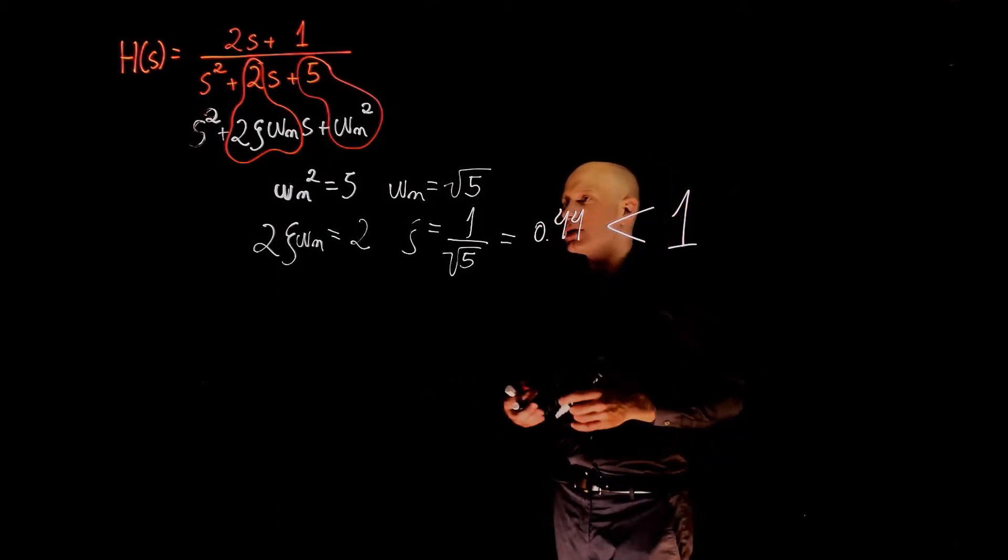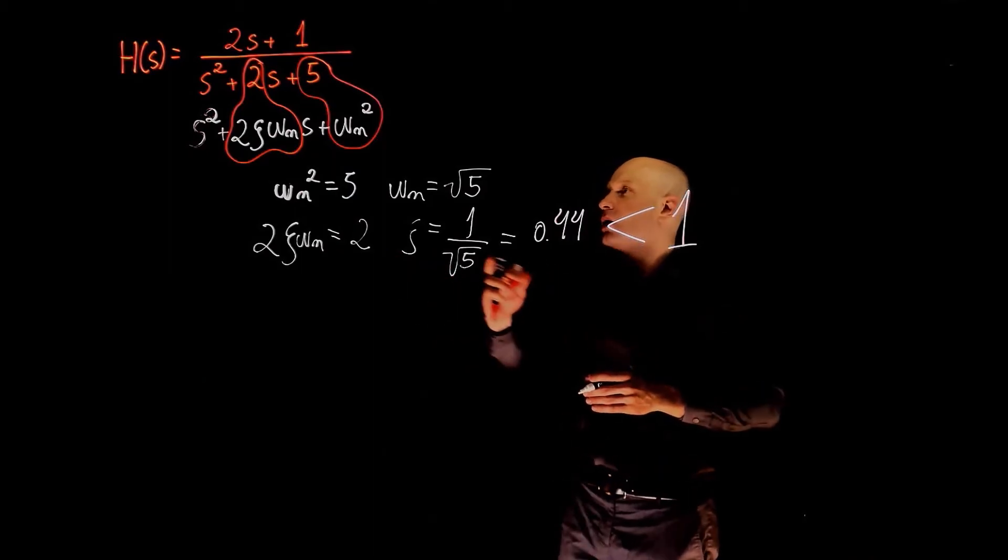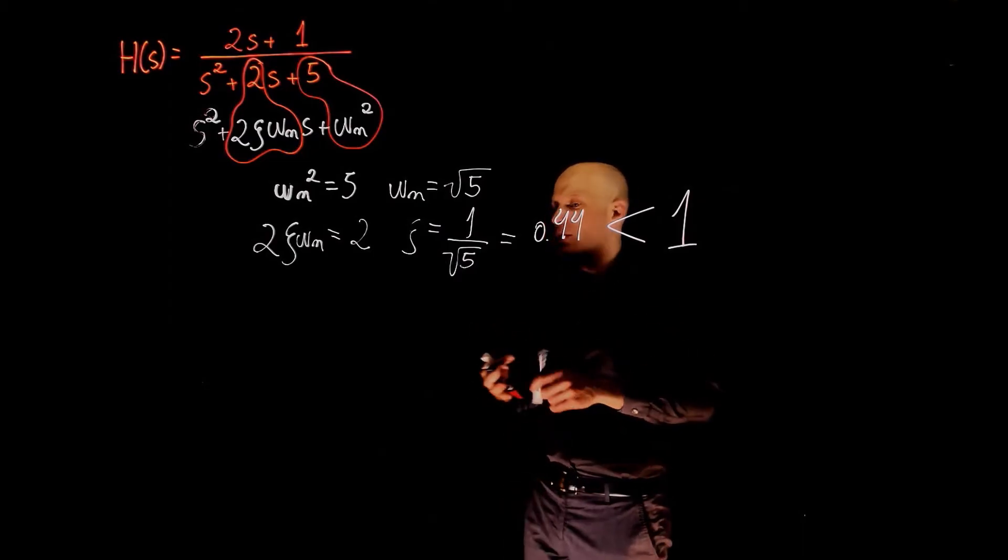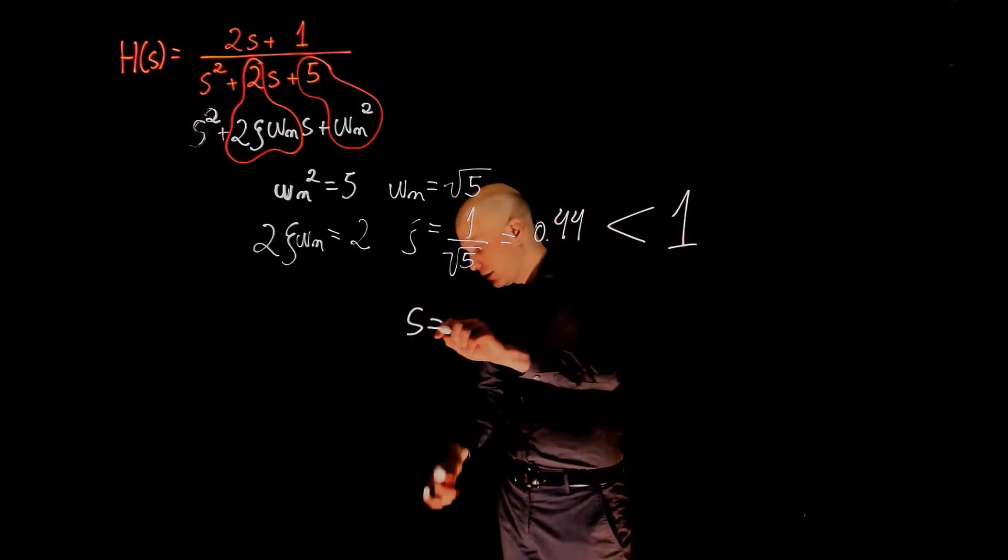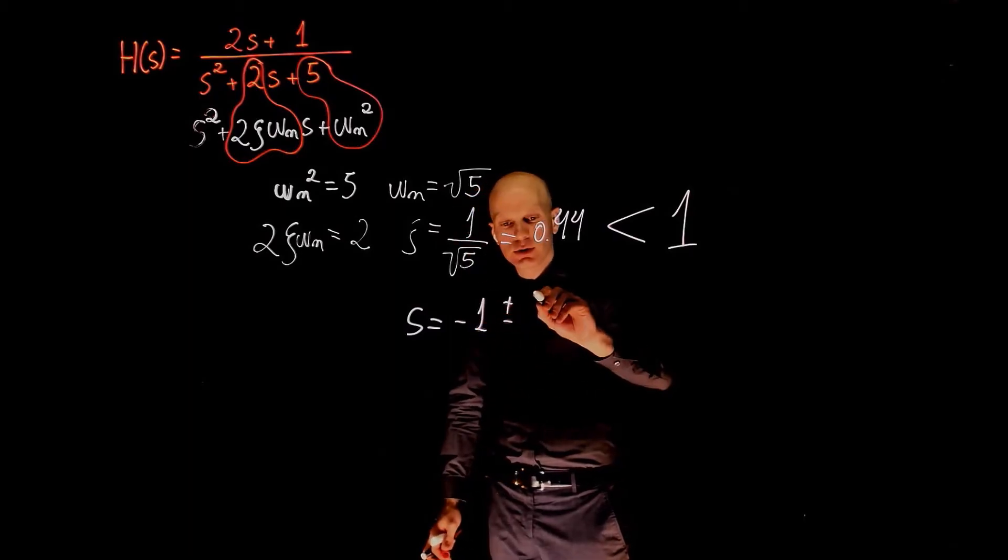Another way to look at this is to look at the poles. Because the damping ratio is less than 1, the poles of this transfer function will be complex conjugate numbers. And they are, in fact, minus 1 plus minus 2j.